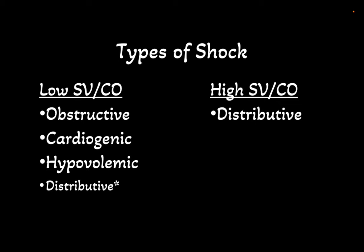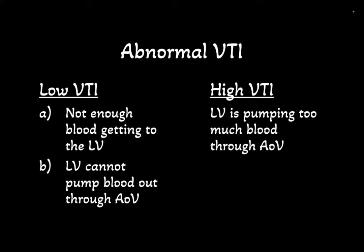With these concepts in mind, let's break down the causes of a low versus high VTI. Remember that VTI is a surrogate for stroke volume and cardiac output. Thus, using the traditional approach of distinguishing between types of shock, low VTI can be caused by obstructive, cardiogenic, or hypovolemic shock. Distributive shock can also lead to a low VTI but this is less commonly seen. On the other hand, distributive shock is a primary cause of a high VTI. Rather than memorizing this, I find it easier to understand the mechanisms behind an abnormal VTI.